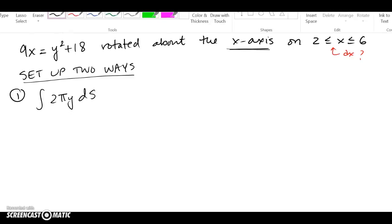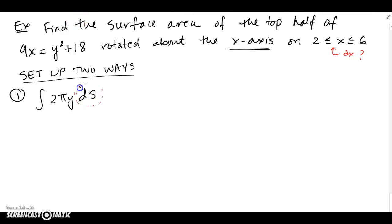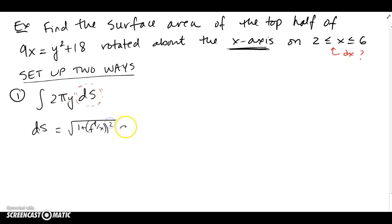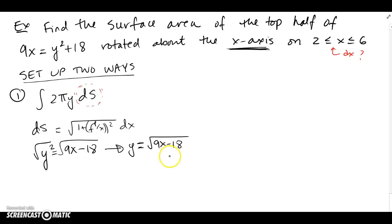We use 2πy ds because it's an x-axis rotation. For the first approach — a DX problem — the DS formula must be sqrt(1 + [f'(x)]²) dx, which means I have to isolate y. It's actually easier to isolate x, and we'll do that the second way. But for the DX approach, I must isolate y and find y prime. When I isolate y, I get a function and I choose the positive square root because we want the top half.